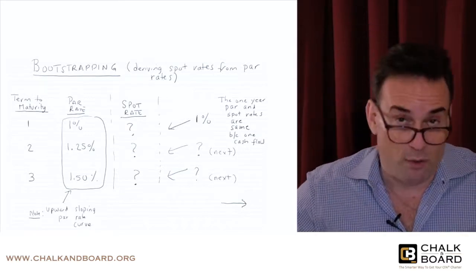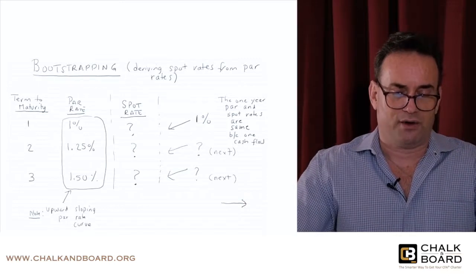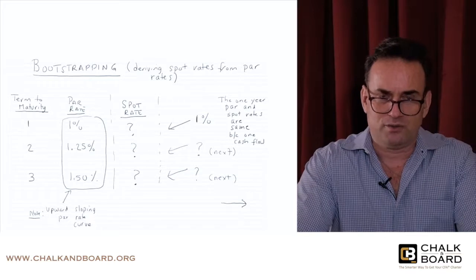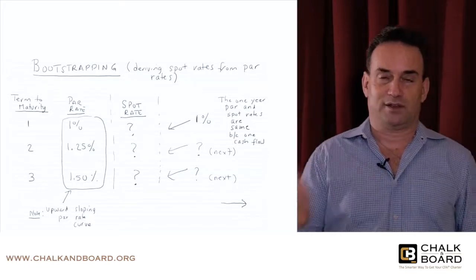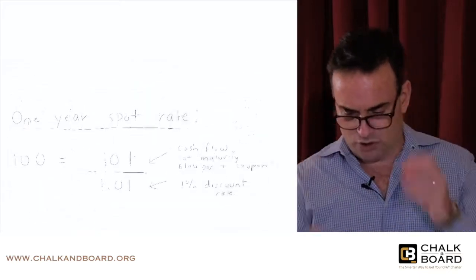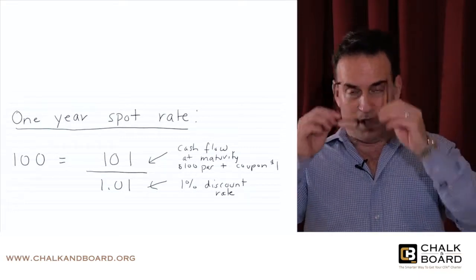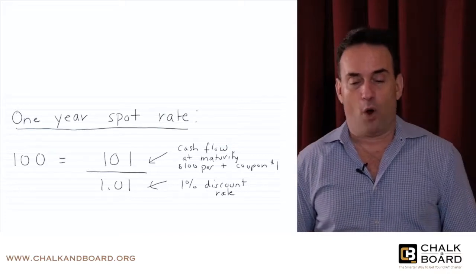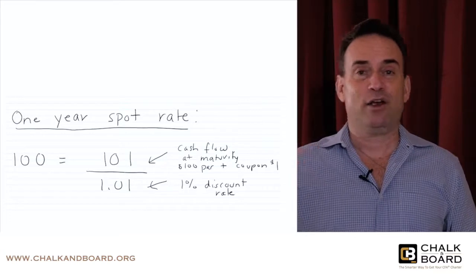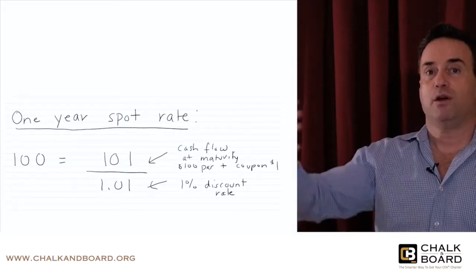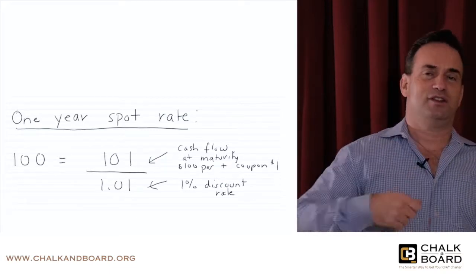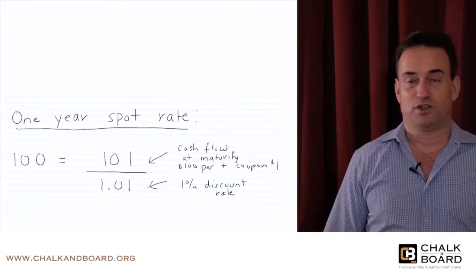I'm going to derive the spot rates for the one-year, two-year, and three-year maturities based on par rates of 1%, 1.25%, and 1.5%. For the one-year maturity: the price of the bond today equals the present value of future cash flows. The bond is at par, so the market price is 100. With a 1% coupon rate, in one year I receive $101 — the principal of $100 plus $1 coupon. What discount rate brings $101 back to $100?